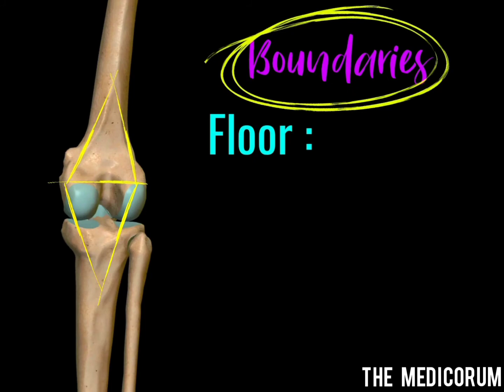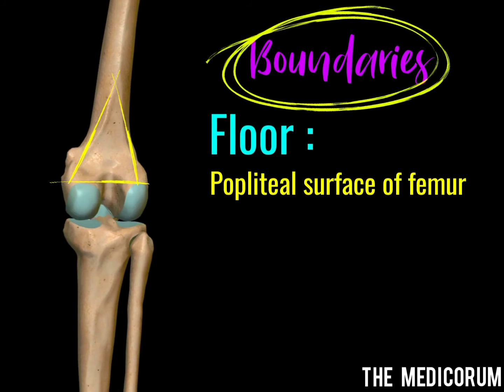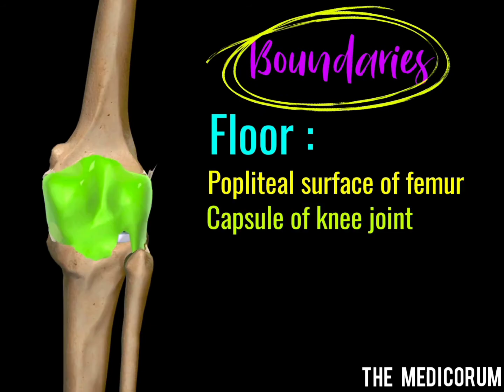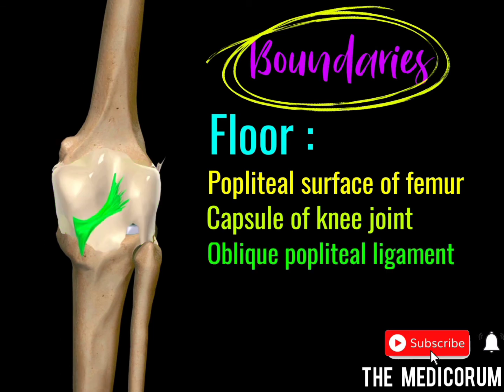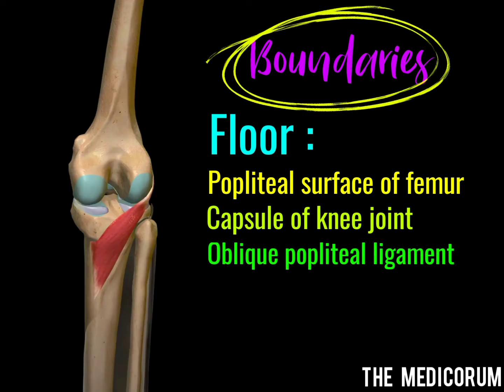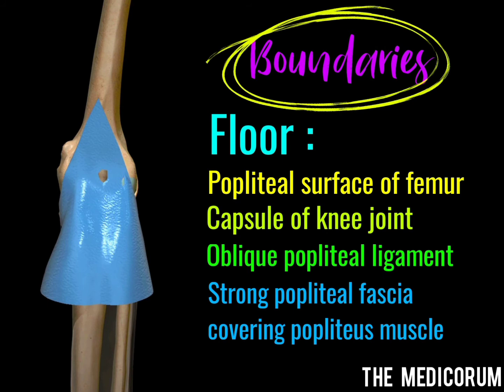The floor of the popliteal fossa is formed by the popliteal surface of the femur. We also have the capsule of the knee joint, as this fossa lies behind the knee joint. On the capsule lies a ligament — the oblique popliteal ligament. Finally, we have the popliteus muscle, which is covered by a fascia known as the popliteal fascia.